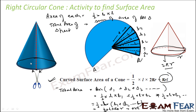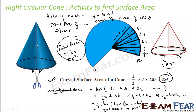The total surface area of the cone includes adding the circular base as well. That is πrl plus πr². So the curved surface area is πrl, and the total surface area is πrl plus πr². Hope you understand this derivation — pretty simple. Take any cone, cut it, unfold the sheet, and the area comes out to be πrl.